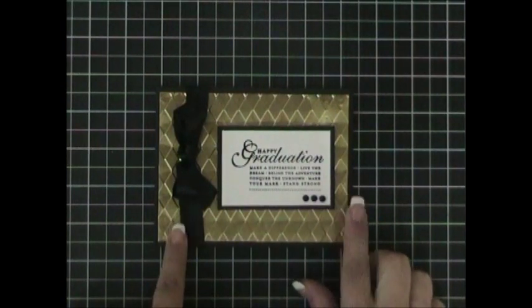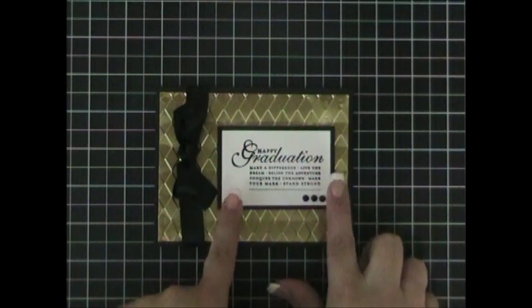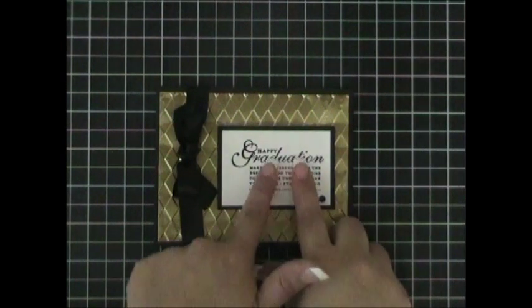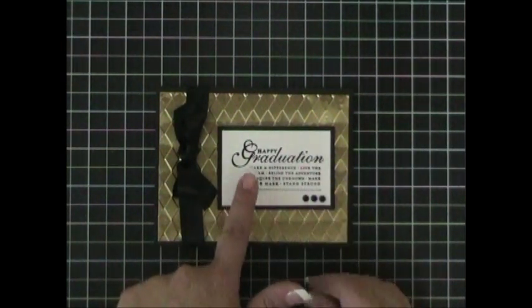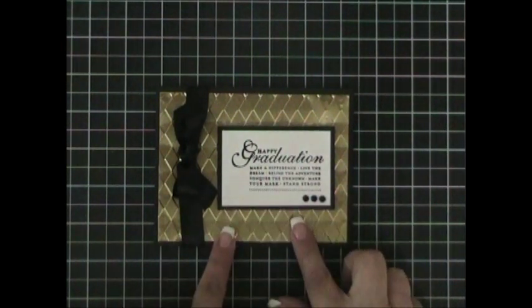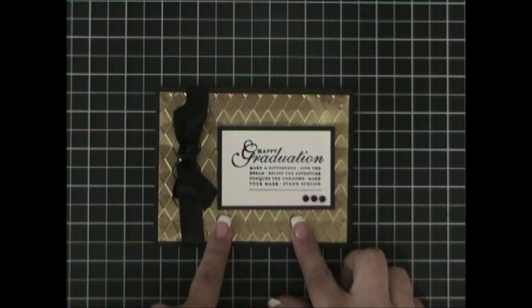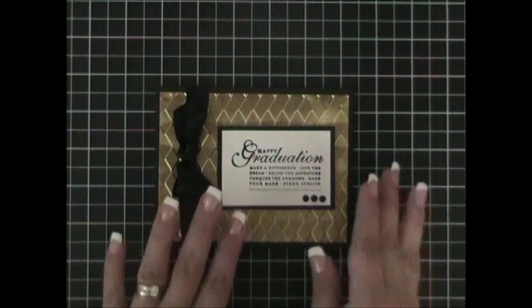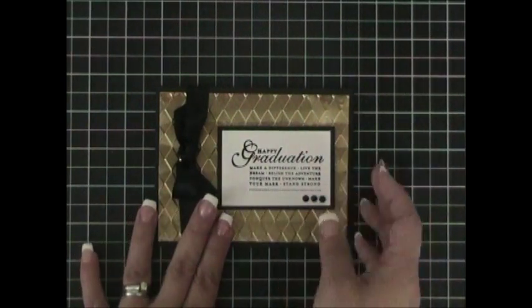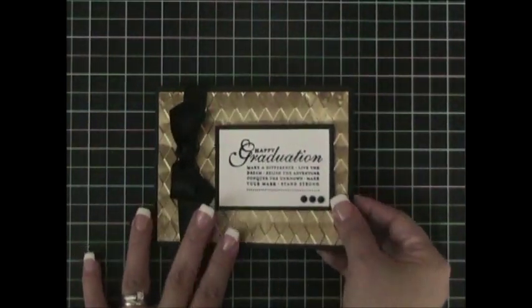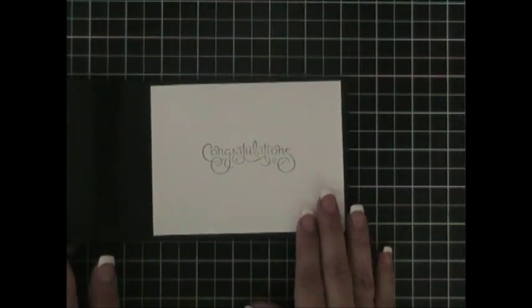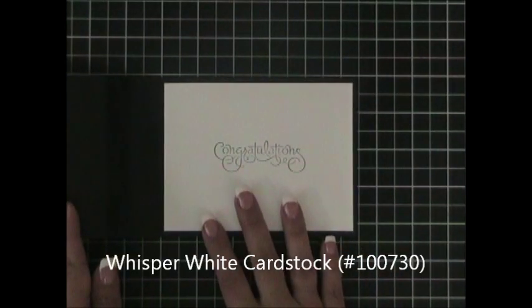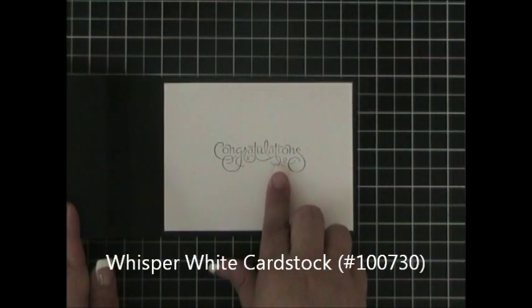This is a great card to keep handy for graduations. All you have to do is print a bunch of these images, keep them handy, and then just change up your metal sheet according to the graduate school colors and you're ready to go. Now, because this is a black card, I also created a 4 by 5 and a quarter piece of whisper white cardstock to mat inside, and then I stamped it with the sentiment of my choice.